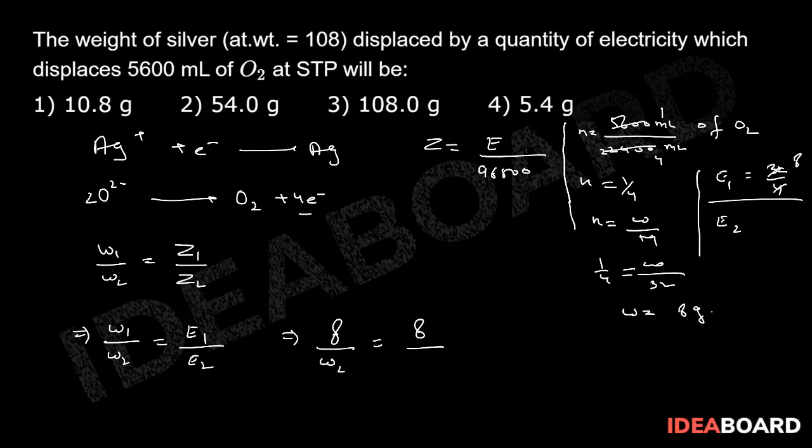For Ag, we will calculate E2. E2 will be molecular mass divided by 1 because there is only 1 electron here. From this, simply W2 will come out to be 108 grams. So option 3 is the correct answer.